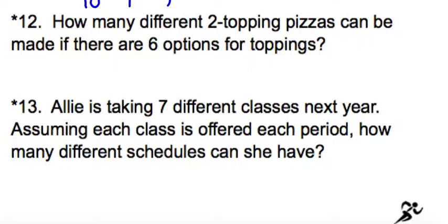Alright, so we have pizza. How many different 2-topping pizzas can be made if there are 6 options for toppings? So we have 6 items, that's our N, what we have to choose from, and we are going to take 2 of them.